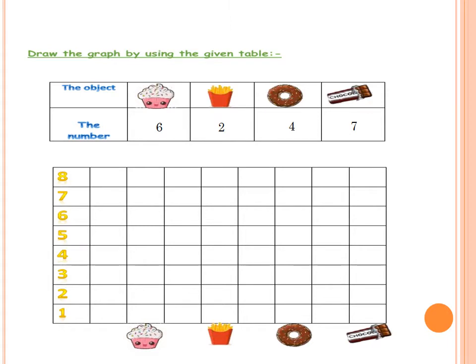Primary 2, let's start with the graph. Here we have a table with 4 objects: the cupcake, then french fries, then donuts, and the chocolate. We want to represent this data on this graph. Let's go to the first one, the cupcake. How many cupcakes in the table? 6 cupcakes. So, we gonna shadow 6 squares above the cupcake.